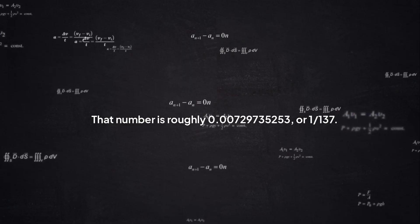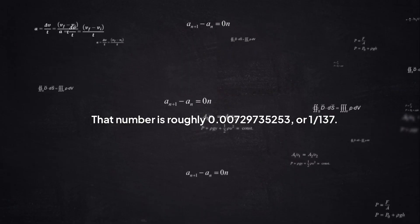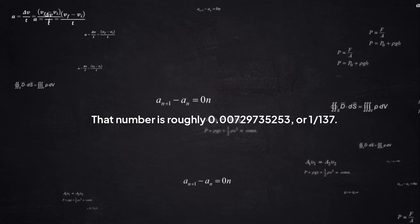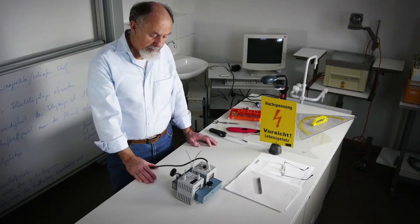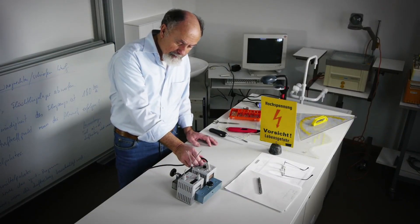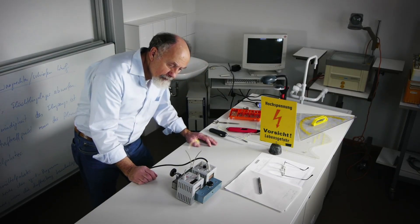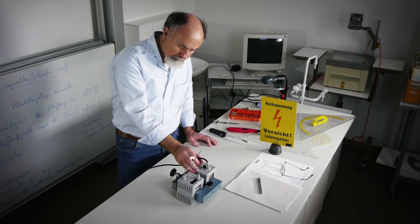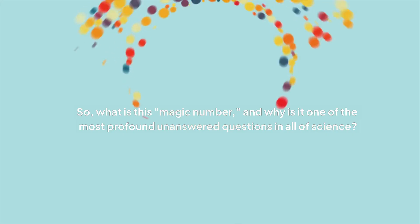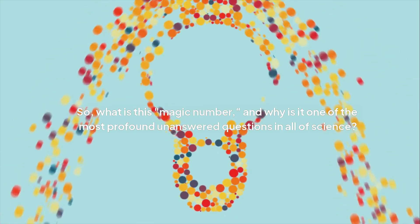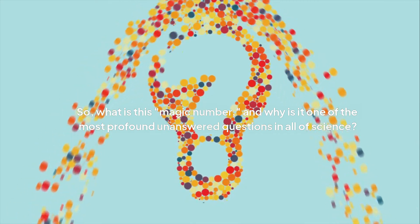That number is roughly 0.00729735253, or 1/137th. Physicists have called it the greatest damn mystery of physics because if it were just a tiny bit different, the universe as we know it would be impossible. So what is this magic number and why is it one of the most profound unanswered questions in all of science?